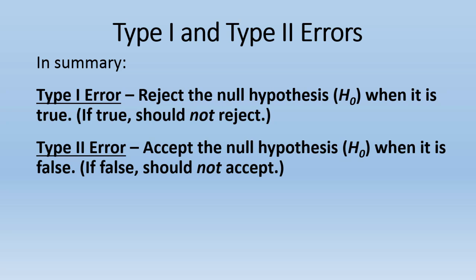And the Type II error is when we accept the null when it is false. And if it's false, we should not accept it. That's why that's an error as well.